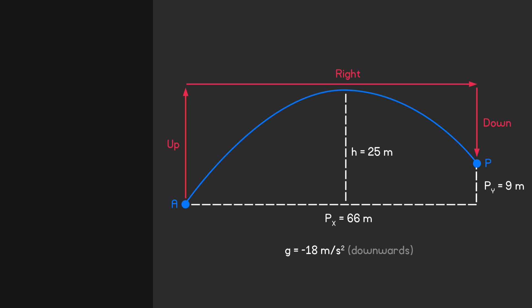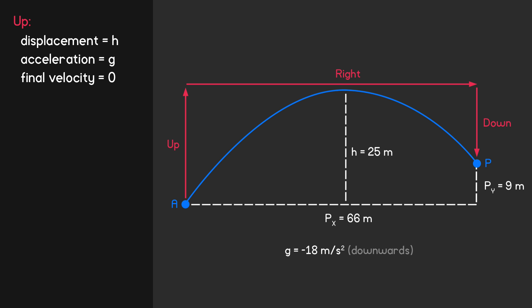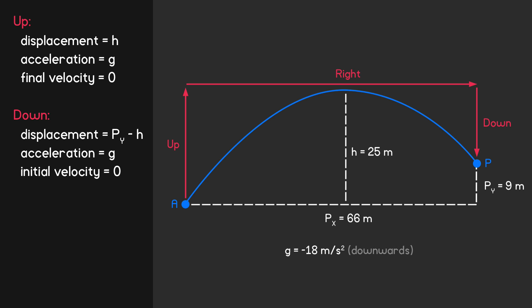Let's list what we know for each of these. For the upwards motion, the displacement is H, the acceleration is G, and the final velocity at the top of the arc will be 0. For the downwards motion, the object moves from a height of H down to point P, so since we're taking downwards movement as being negative, we can write the displacement as P-Y minus H. Once again, the only acceleration is G, and at the top of the arc the initial velocity is 0.